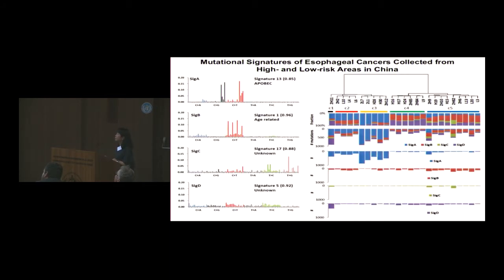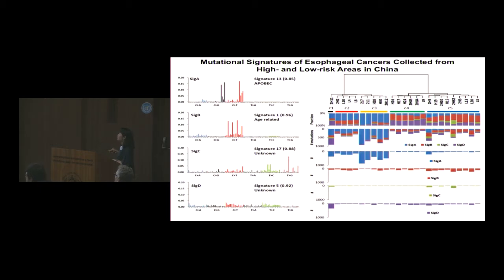We also analyzed the mutational signatures of esophageal cancers collected from high-risk and low-risk areas in China. We extracted four mutational signatures, from Signature A to Signature D. All of these signatures are very similar to those already known in the COSMIC database, and Signature C is very close to COSMIC Signature 17.